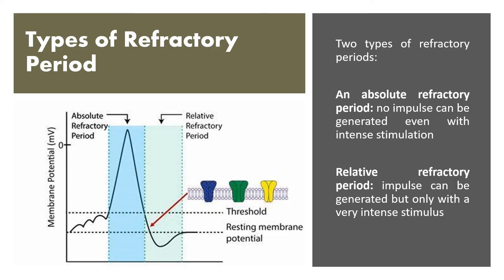There are two types of refractory period. In the absolute refractory period, no impulse can be generated even with an intense stimulus. In the relative refractory period, an impulse can be generated, but only with a very intense stimulus.